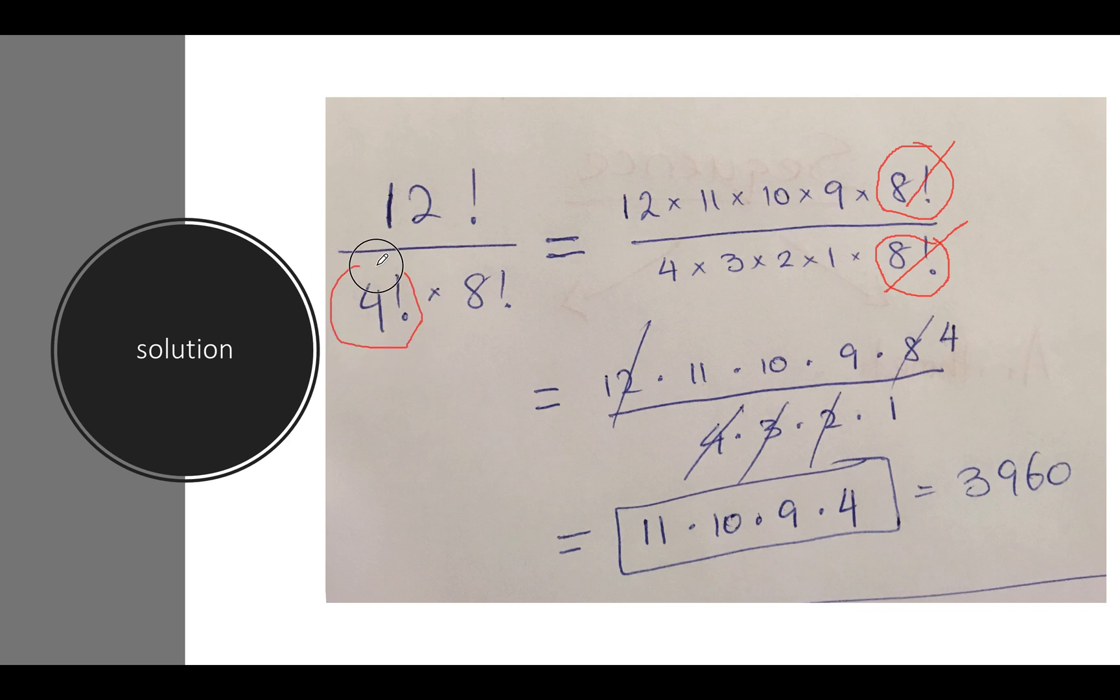All I am left with is 12, 11, 10, 9, and then 4 factorial is the same thing as 4 times 3 times 2 times 1. Now I can simplify: 4 times 3 is 12, right? This is the same thing as this 12 here, so I cancel the 12 out. I am left with 11, 10, 9, and 8 and 2 and 1. 2 goes into 8 four times, so I'm left with 11, 10, 9, and 4, which on my calculator gives me 3960.